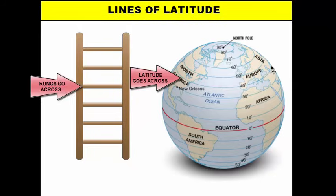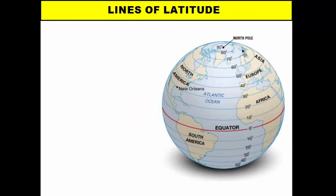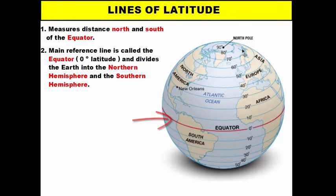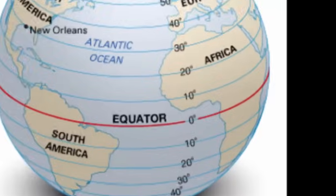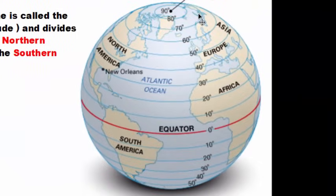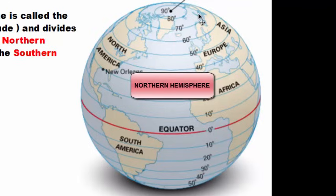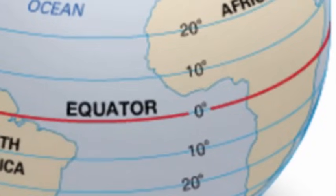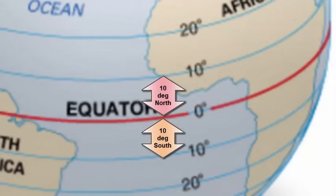The purpose of latitude lines is to measure distance from the equator. The equator is the main reference line — all other latitude lines are based off of it. We measure distances from the equator in degrees. The equator splits the earth into two halves called hemispheres: the top half is the northern hemisphere and the bottom half is the southern hemisphere. When you give a latitude coordinate like 10 degrees, you're saying you're 10 degrees north or 10 degrees south of the equator.